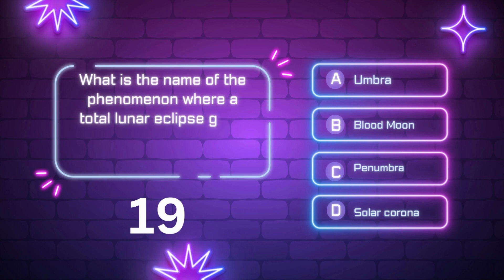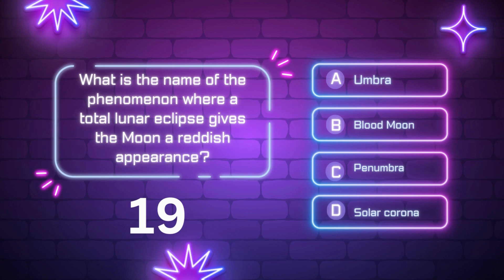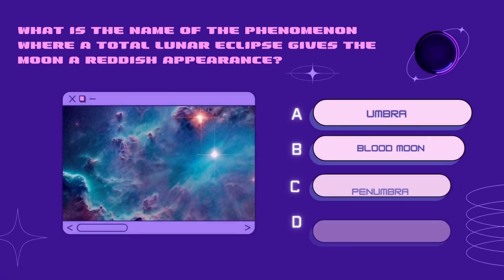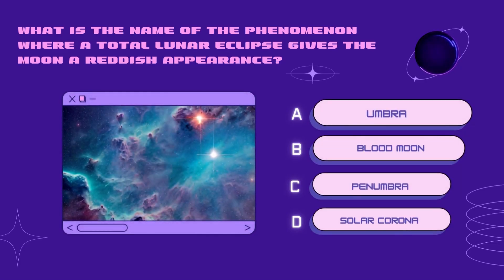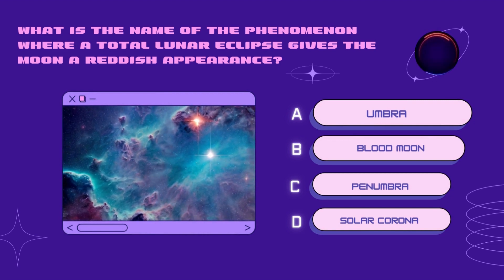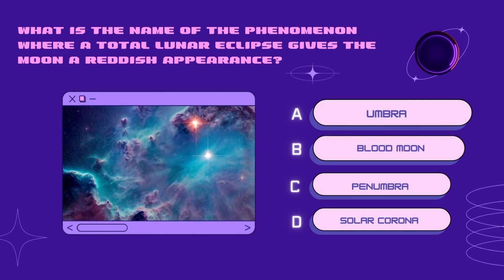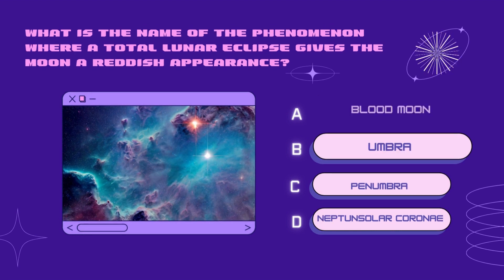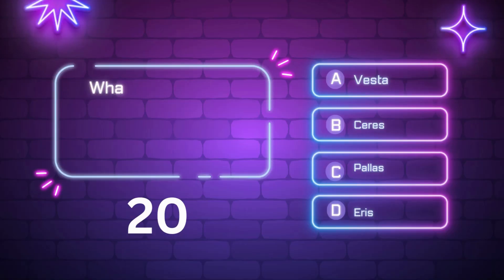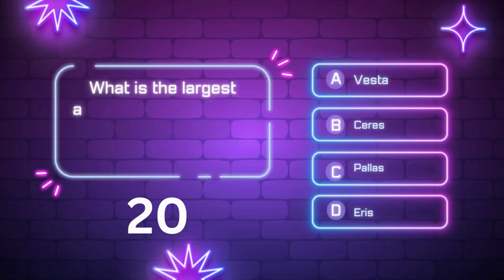What is the name of the phenomenon where a total lunar eclipse gives the moon a reddish appearance? Umbra, penumbra, blood moon, solar corona. Your time starts now. Right answer is blood moon.